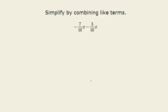Simplify by combining like terms. Our expression given is negative 7 sixteenths x minus 3 sixteenths x.